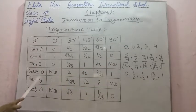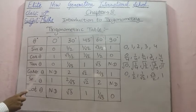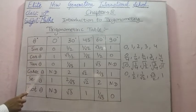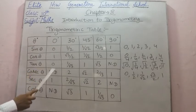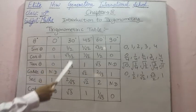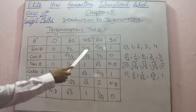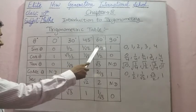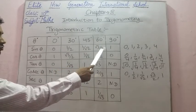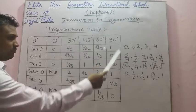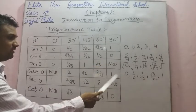Now cosec theta is the reciprocal of sin theta. So: reciprocal of 0 is not defined; reciprocal of 1/2 is 2; reciprocal of 1/√2 is √2; reciprocal of √3/2 is 2/√3; and reciprocal of 1 is 1.